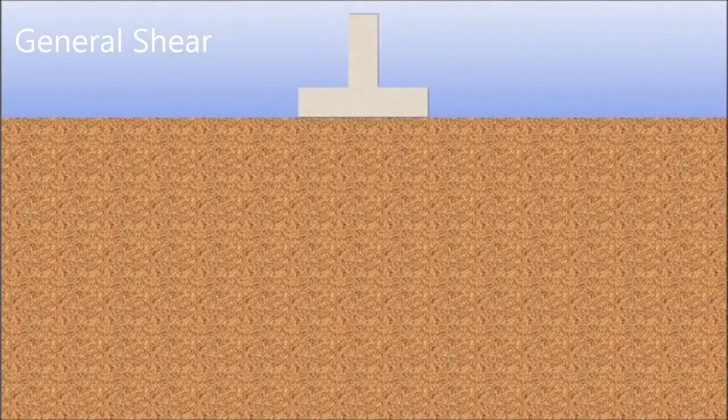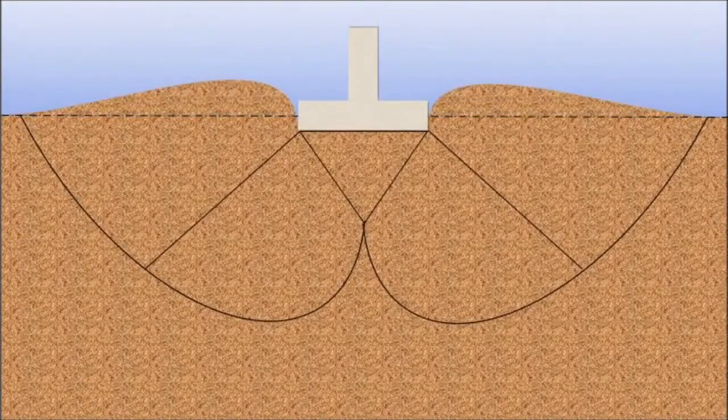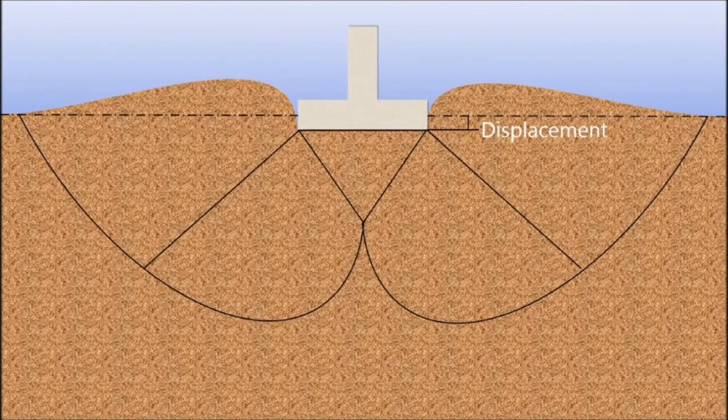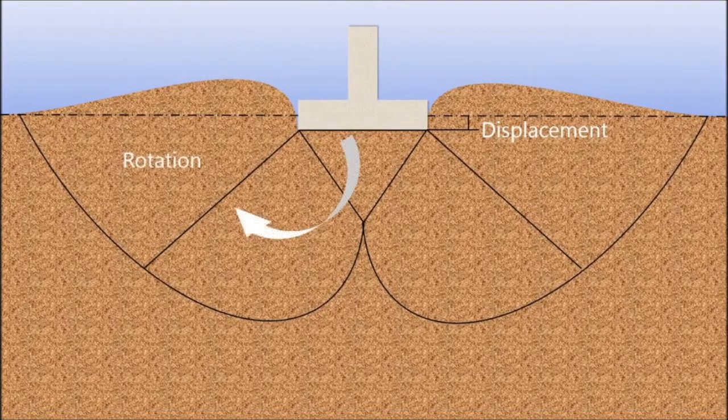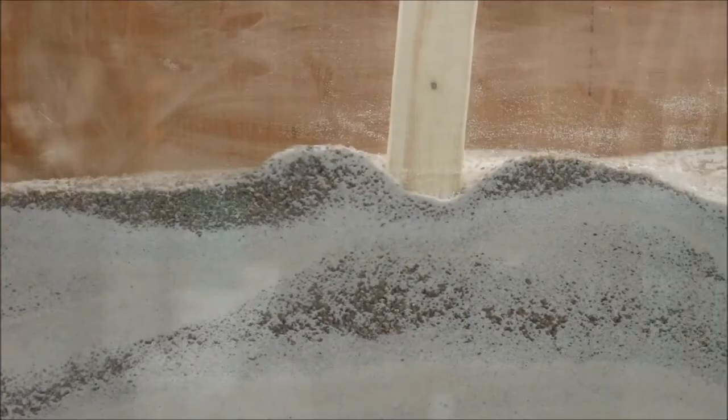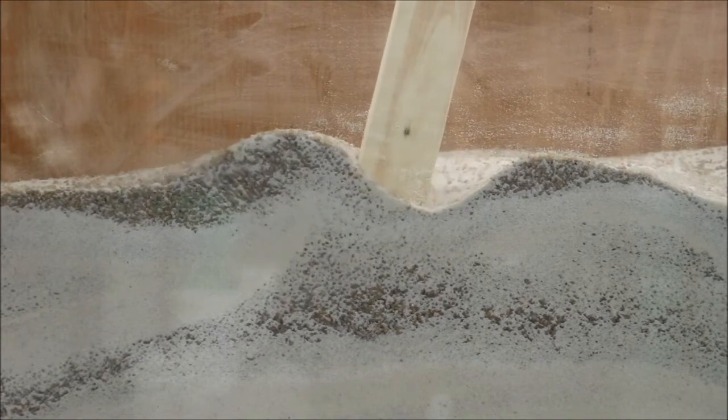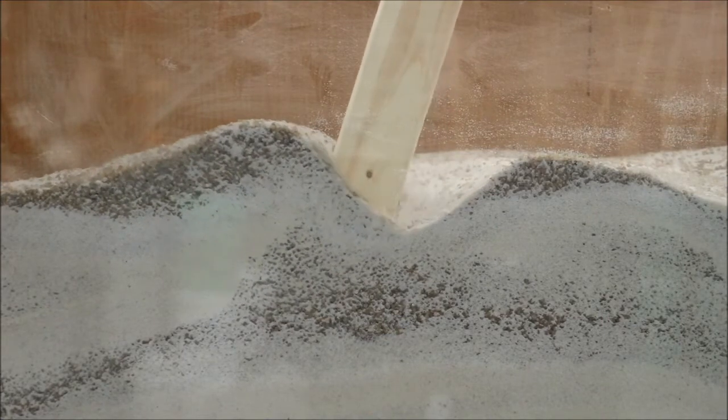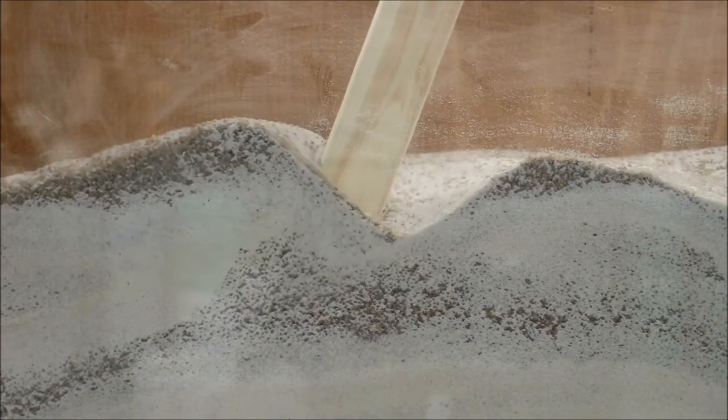General shear failure occurs in dense cohesionless soils and undrained cohesive soils. General shear failure is characterized by a well-defined shear plane with clear disturbances in the surface soils. This type of failure occurs suddenly and can cause significant rotation of the structure.